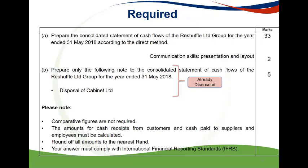Part A of the required instructed you to prepare the consolidated statement of cash flow for the year ended 31 May 2018 according to the direct method. It is important to note that there are two presentation marks available and these marks are easy to score by just providing disclosure as required. The difference between the direct and indirect method lies in the calculation of cash generated from operations. It is also very important to read the 'please note' section as it provides further guidance. This section specifically states that the amount for cash receipts from customers and cash paid to suppliers and employees must be calculated.